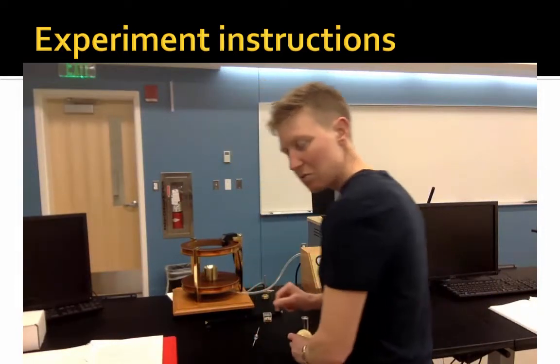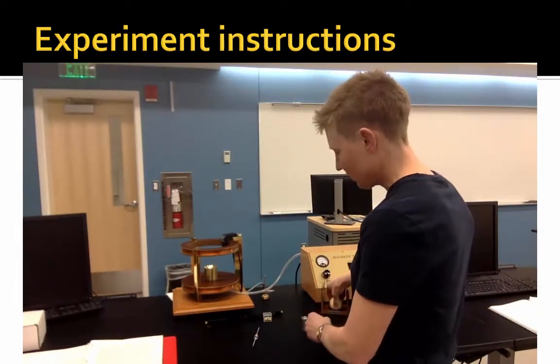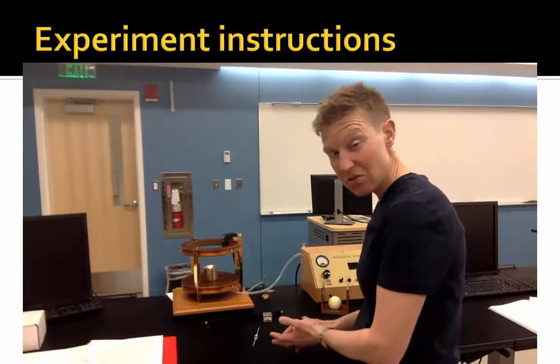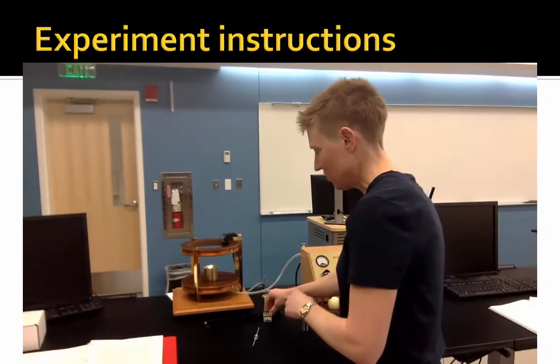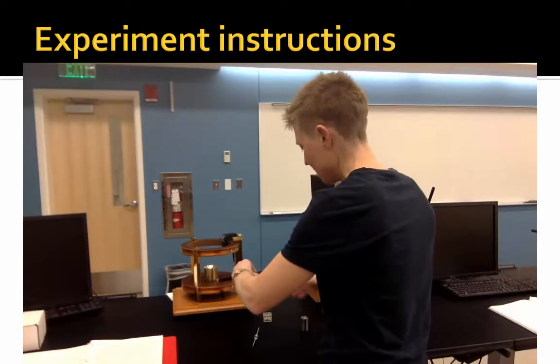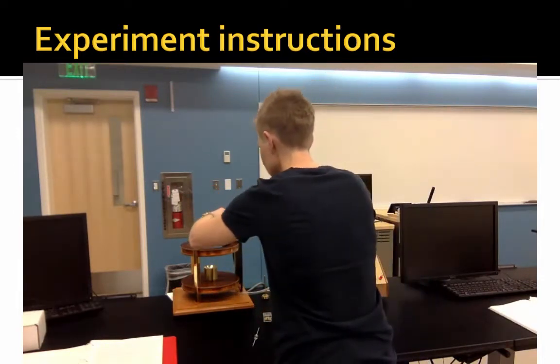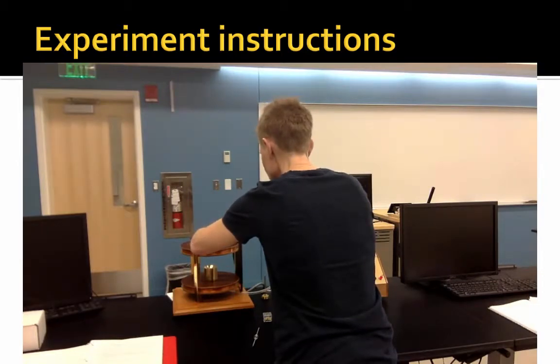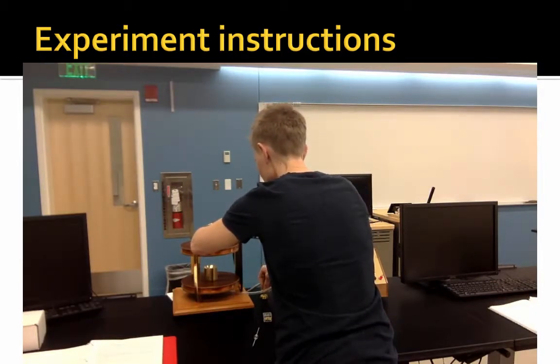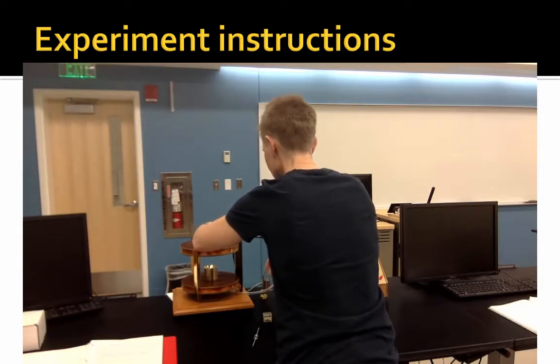Now what we want to do is we want to balance the gravitational force in a field gradient with a magnetic force. And we'll do that by setting up this little magnetic force balance. So I'm going to carefully position the magnetic force balance on its little holder here.